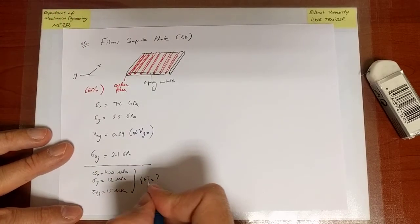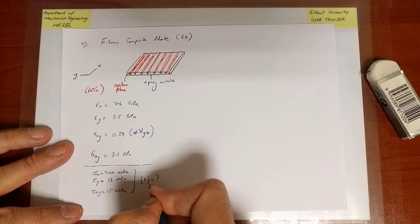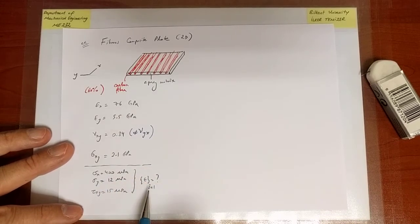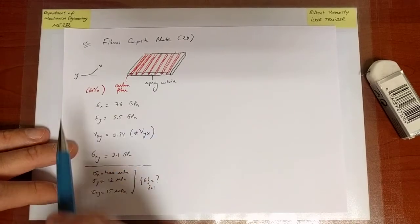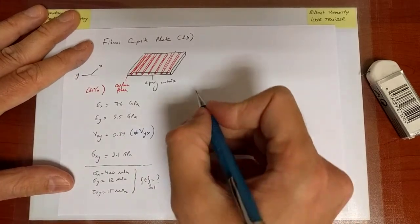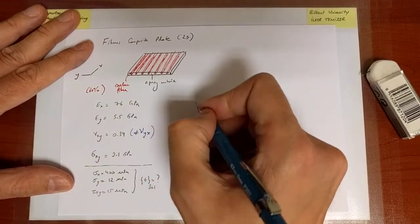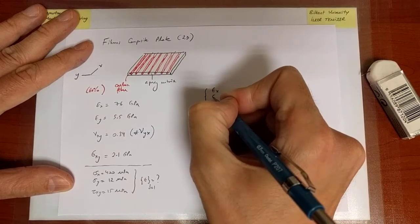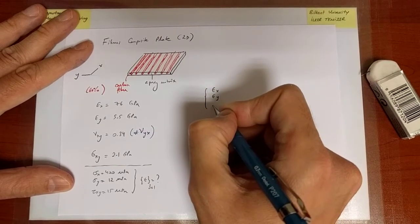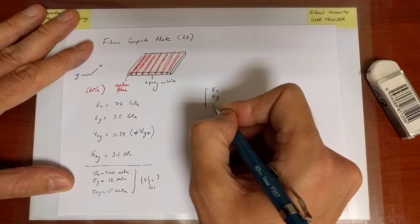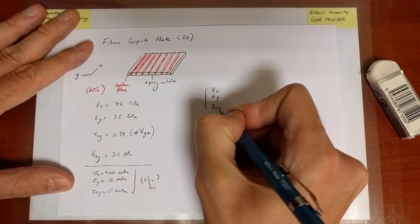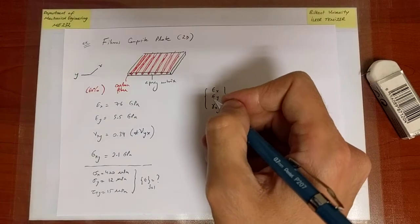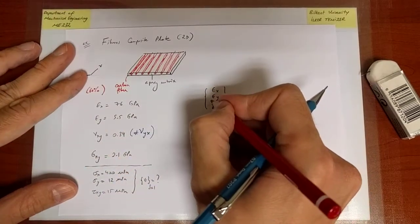The strain is indicated as a vector. Here it will be only 3 by 1 because the z direction is not there. In other words, when I want to solve this problem, I will relate the components of strain to stress only through x, y, z.